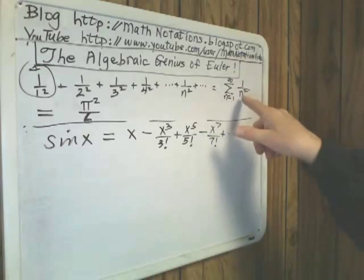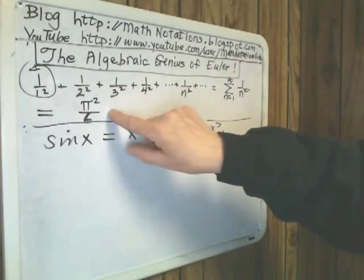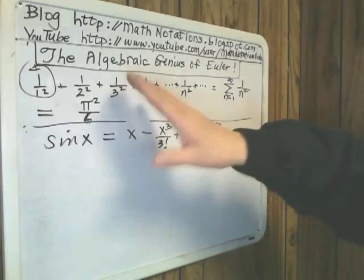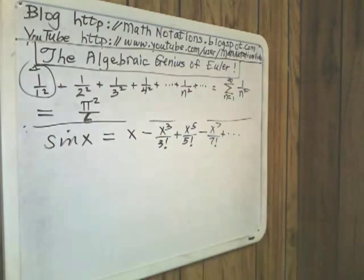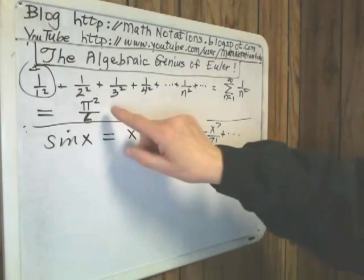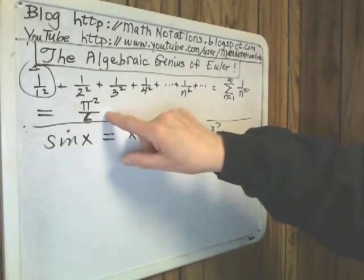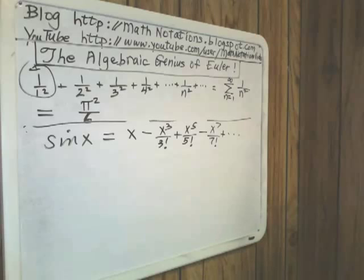In algebra, this is called summation notation. And he derived that it's equal to pi squared over 6. You could try this on your calculator. Add several of these fractions and see how close you get to the decimal for pi squared over 6. But we have to move quickly.